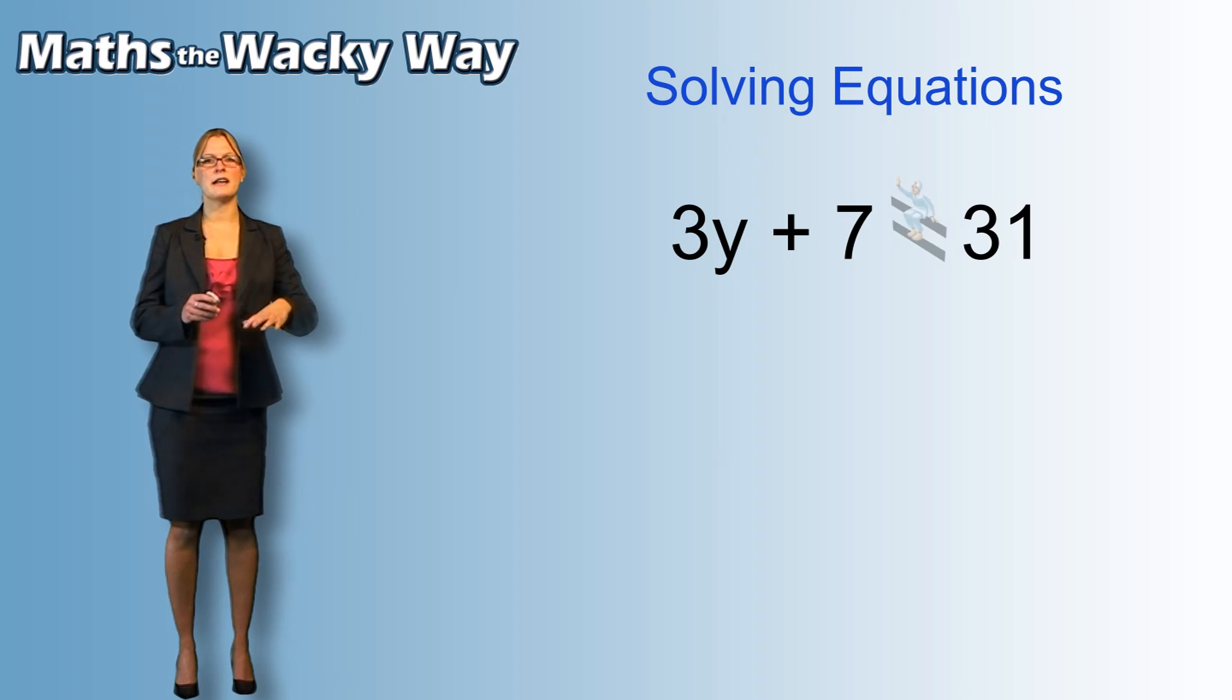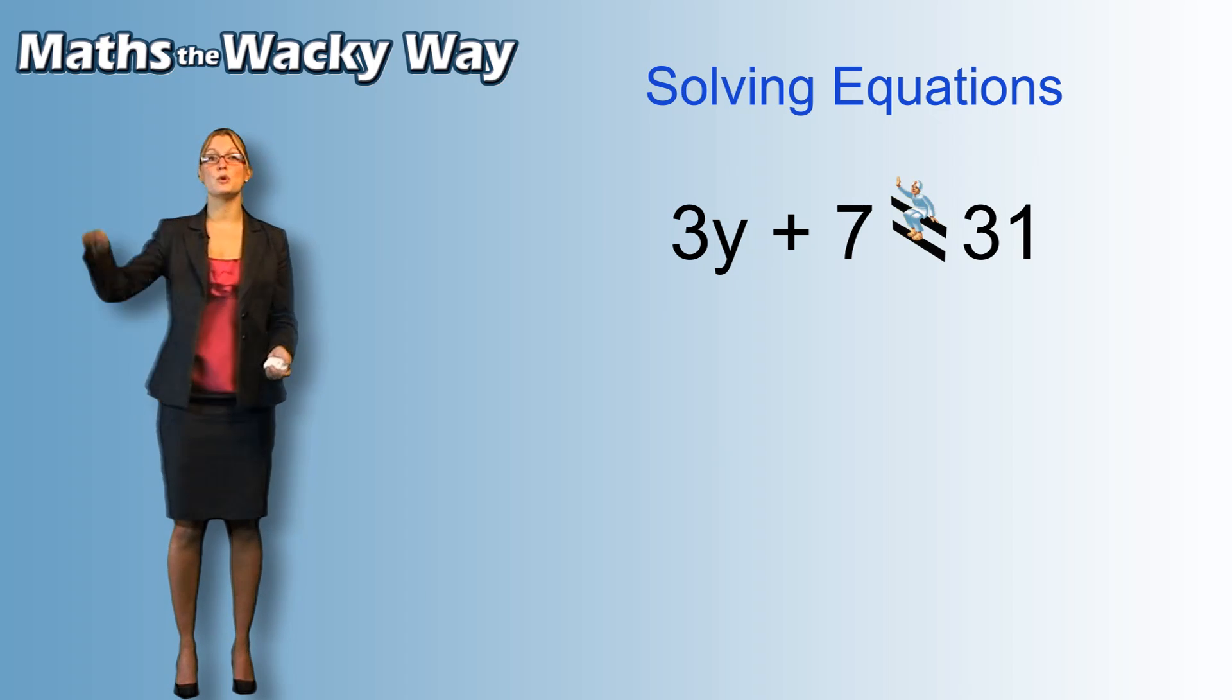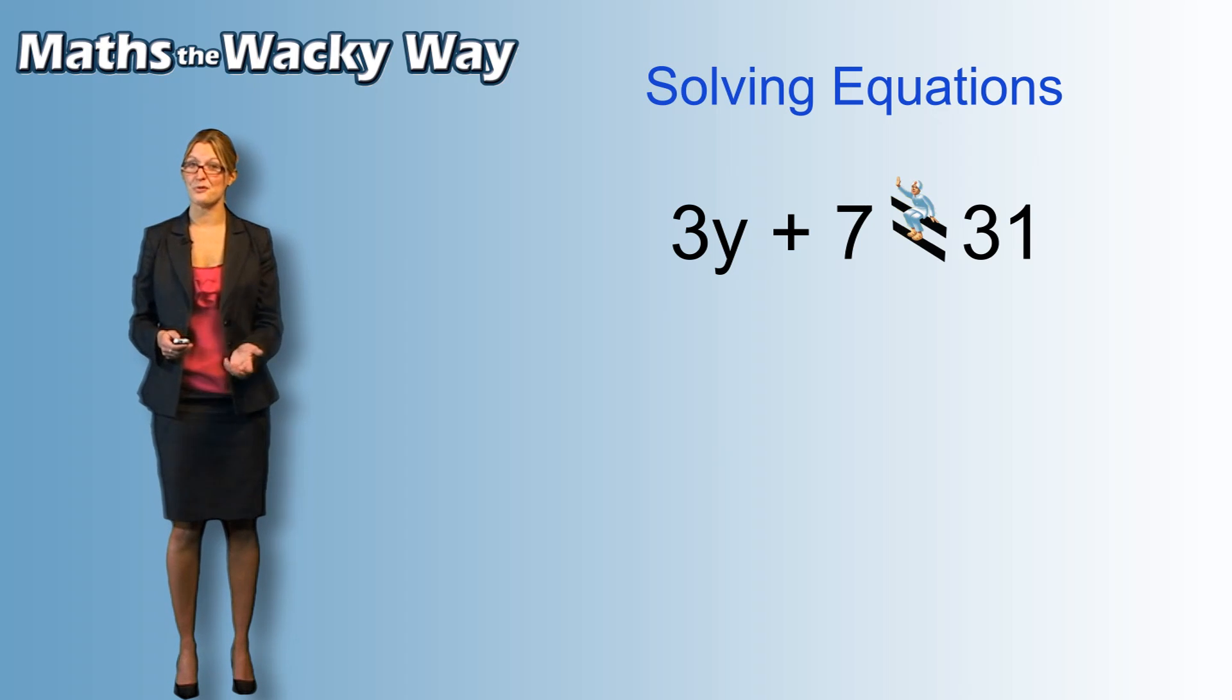Now, in the equal sign, there's a little man and he sits there and when you pass him, he gives you a high five. Now when he gives you a high five, you become the opposite of what you were before.